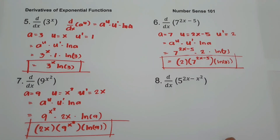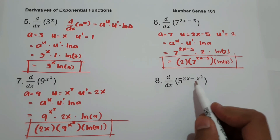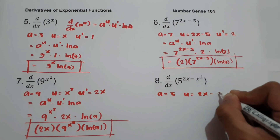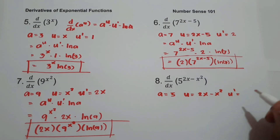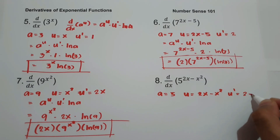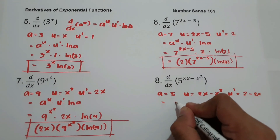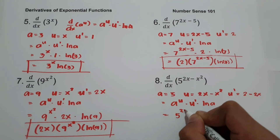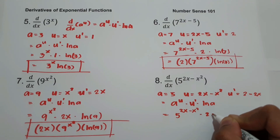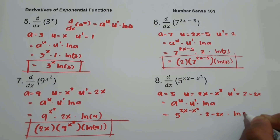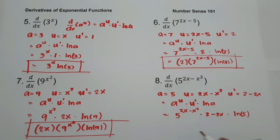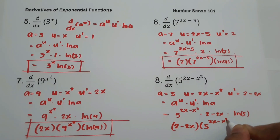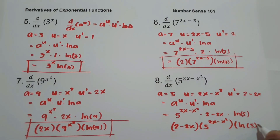For number 8, what is the derivative of 5 raised to 2x minus x squared? Let a equal 5, u equal 2x minus x squared, and u prime equal the derivative of 2x minus x squared. The derivative of 2x is 2 and the derivative of x squared is 2x, so u prime equals 2 minus 2x. Applying the formula: 5 raised to 2x minus x squared, times (2 minus 2x), times ln 5. Our final answer is (2 minus 2x) times 5 raised to 2x minus x squared times ln 5.